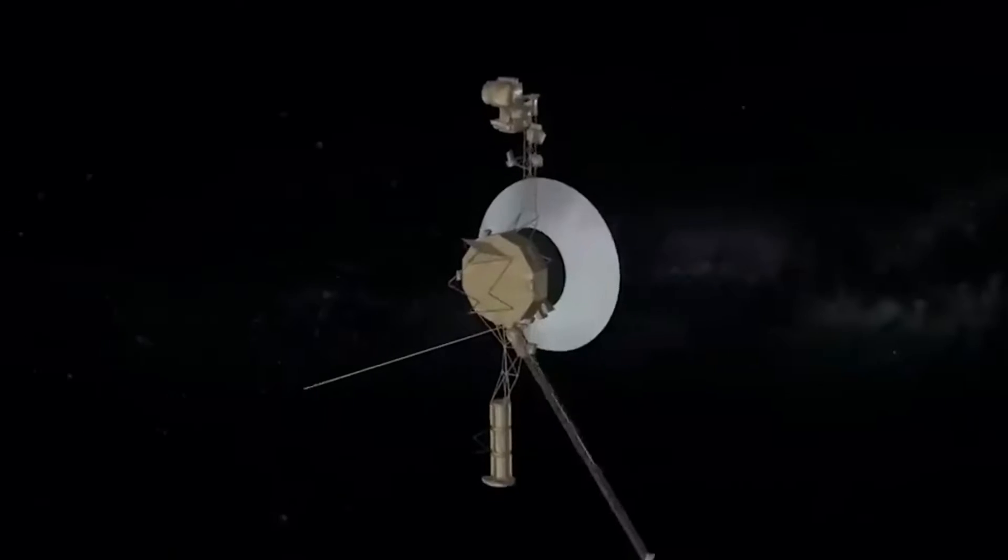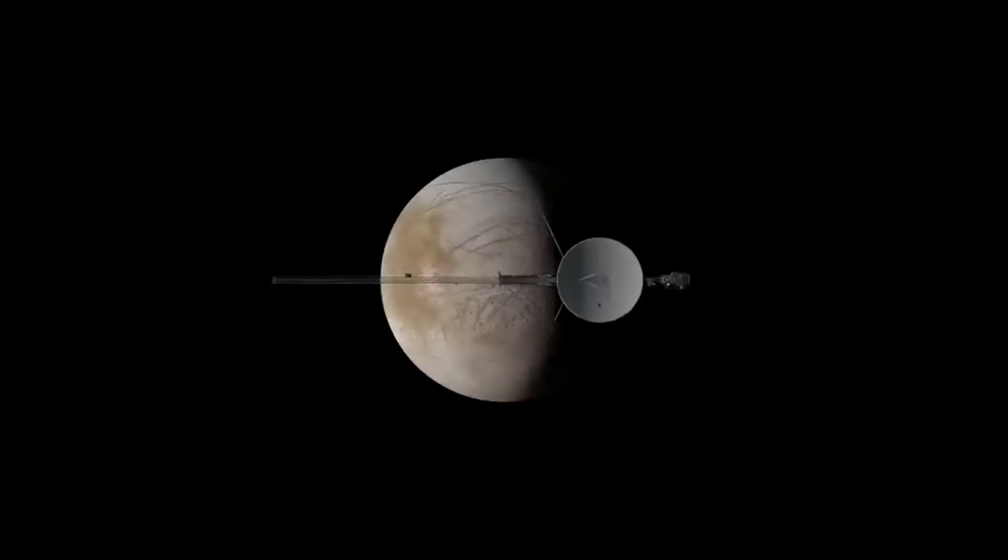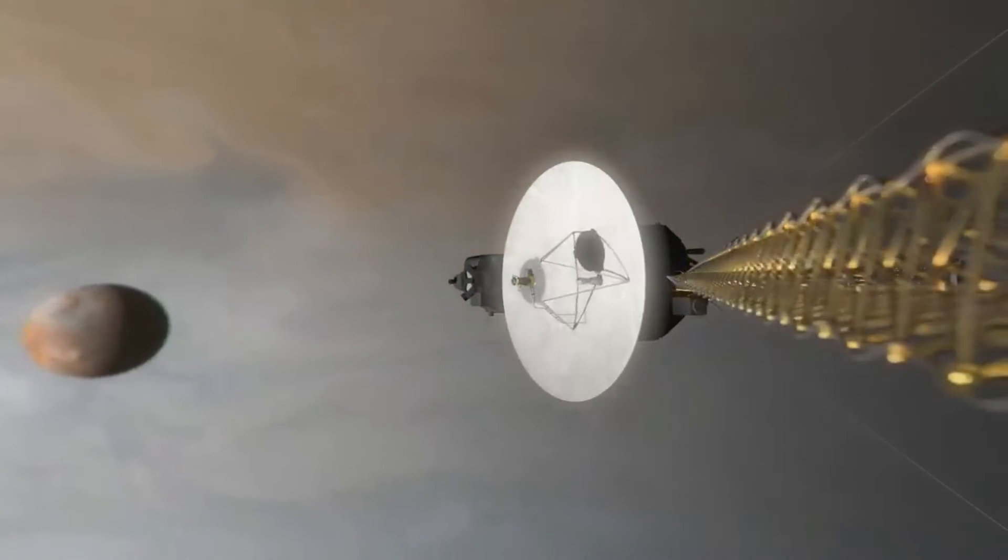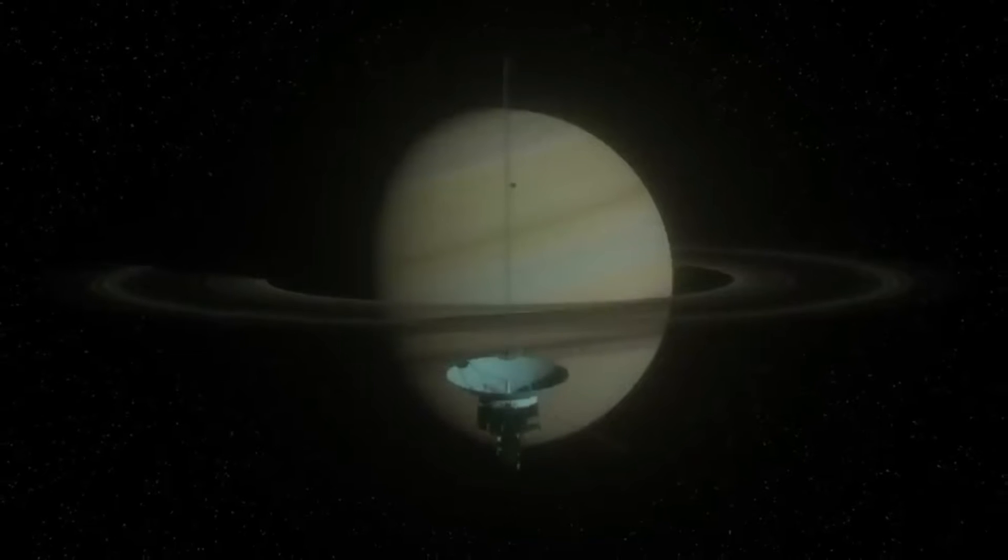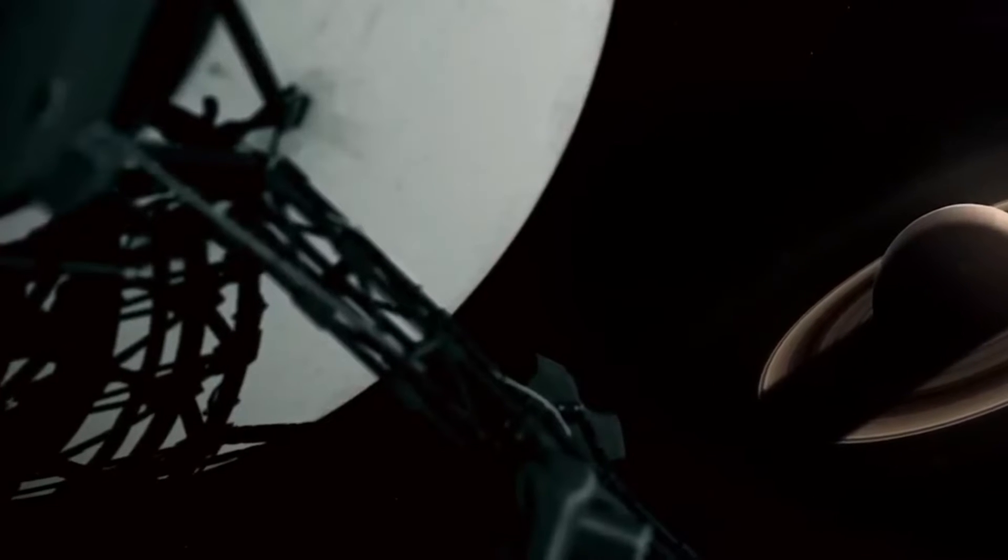To fully understand the Voyager's journey into interstellar space, one must first understand the concept of the heliosphere. The heliosphere is a bubble-like region that surrounds our solar system and is dominated by solar wind, a stream of charged particles from the Sun. Beyond the heliosphere lies interstellar space, the vast expanse between the stars in our galaxy.